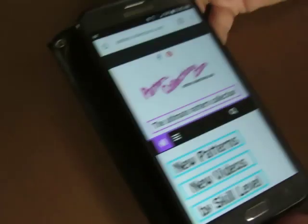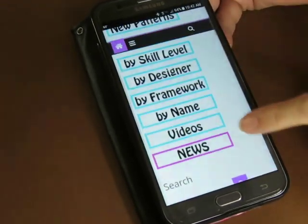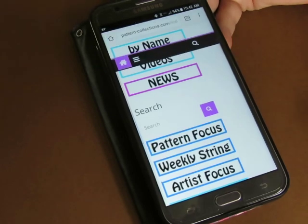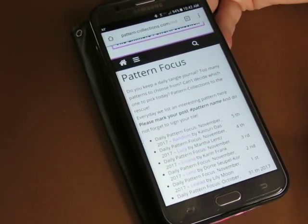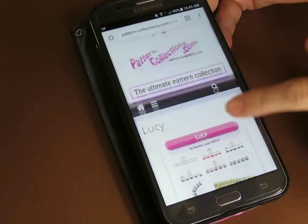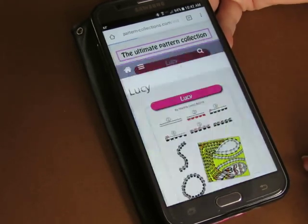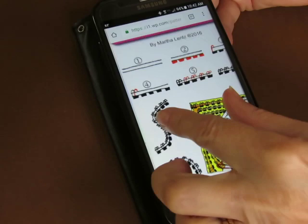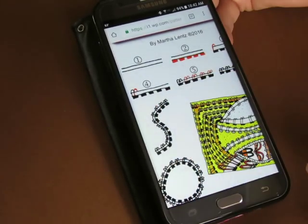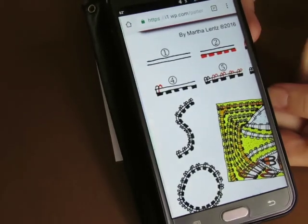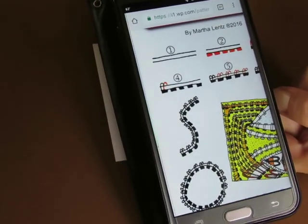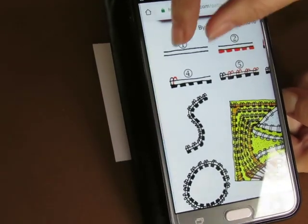All right, let's see what's on tap for today. Pattern-collections.com, we're going to go down to pattern focus and look at the pattern called Lucy. Get it nice and big here. Okay, first thing we're going to do is make some parallel lines like that.